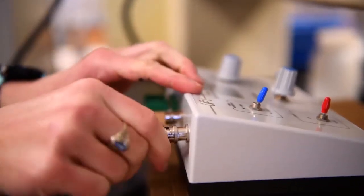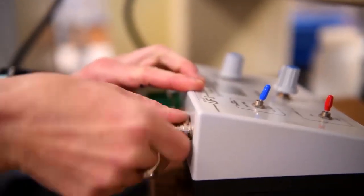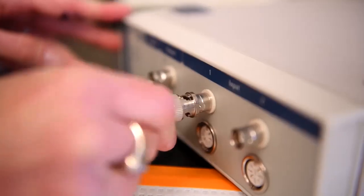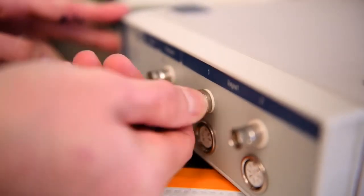Set up the impedance converter by plugging in the black BNC cable to the AC output on the unit and connecting it to the power lab data logger using the channel 1 port.